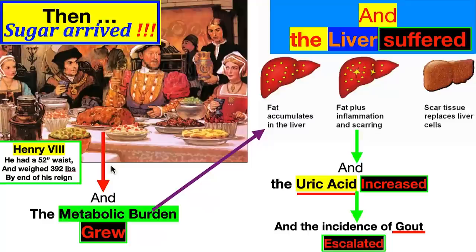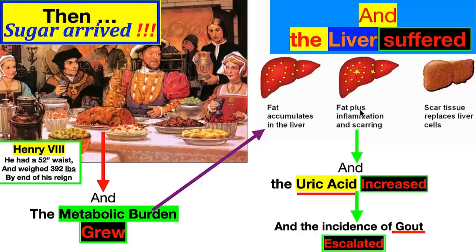Then the sugar arrived. Henry VIII had a 52-inch waist and weighed 392 pounds — 28 stone — by the end of his reign. The metabolic burden grew and the liver suffered. Fat accumulates in the liver; too much glucose and fructose goes into fat through the polyol pathway. Fat plus inflammation creates scar tissue, the liver starts to deteriorate, uric acid increases, and the incidence of gout escalated. This changed everything: sucrose, glucose, and fructose changed everything.